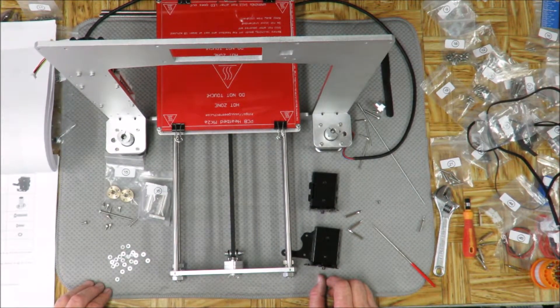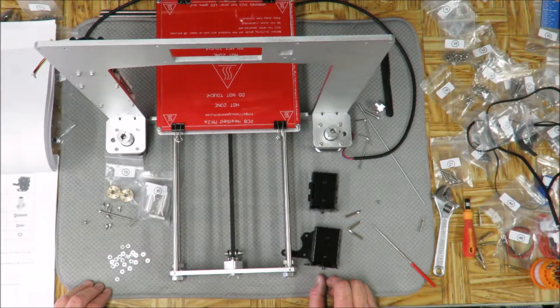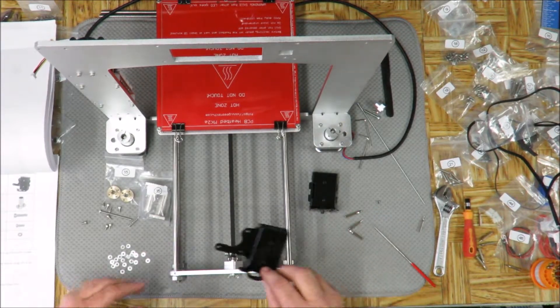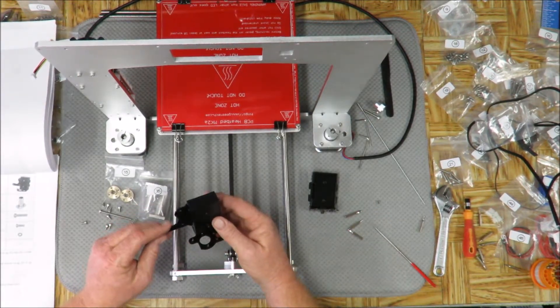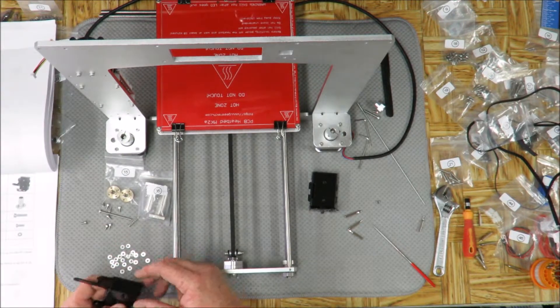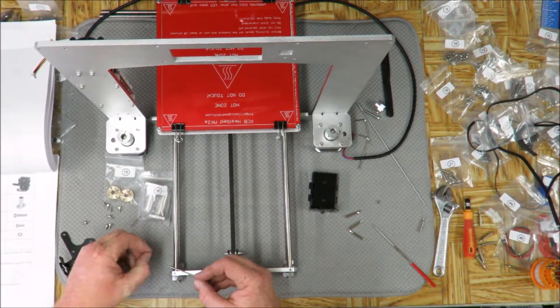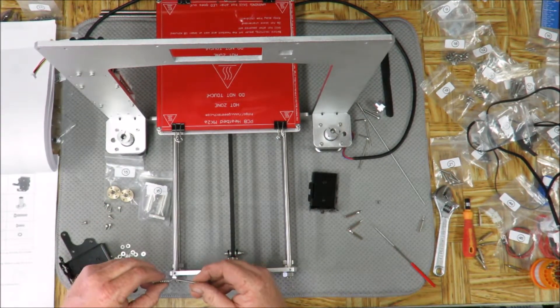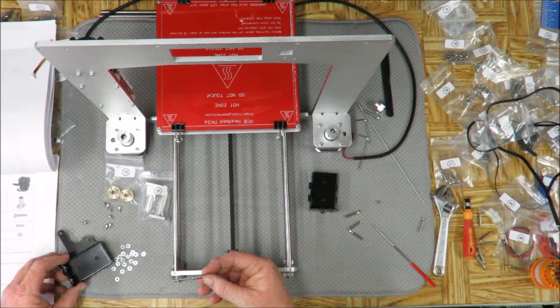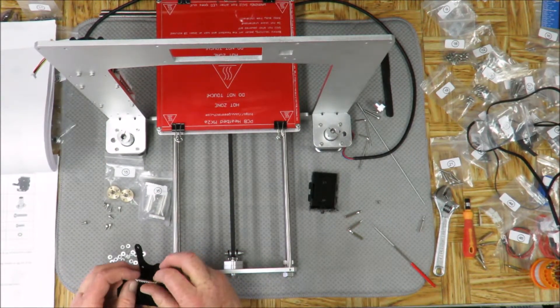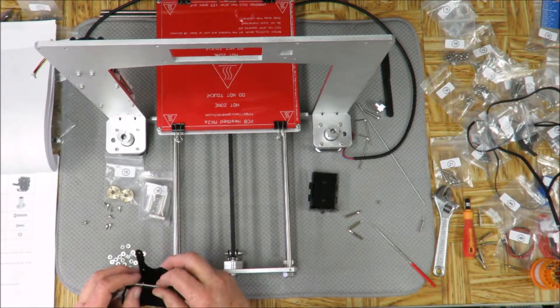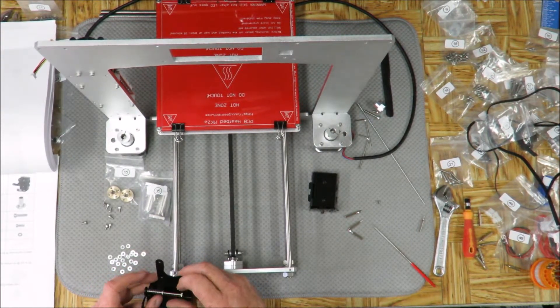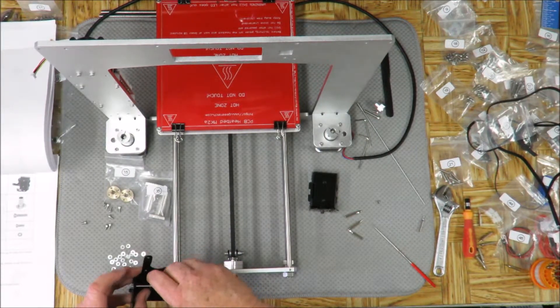It says mount the end stop trigger, thread the M3 washer spring. Okay, so this is the side where the stepper motor is going to be. What we're supposed to do, if I remember from the video correctly, is take one of these, pop a washer on it, put it through the spring, and then it feeds through this right here.